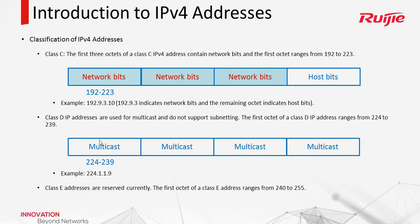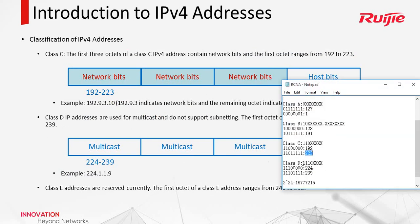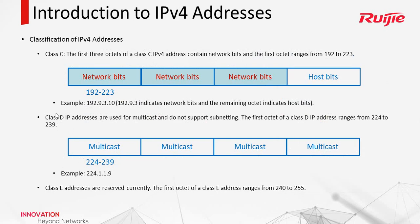Class D is a special IP address — we call it multicast. When you learn HCNP courses we will talk about more about this. And at last, Class E — but Class E addresses are reserved.